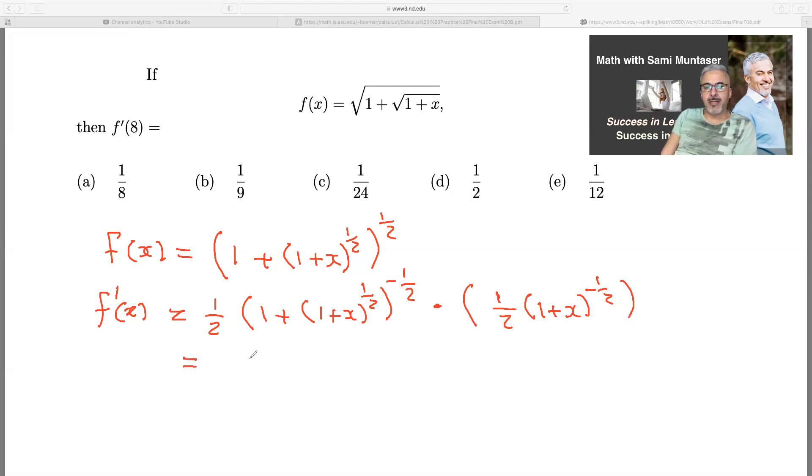Now here, I think I'm just gonna write it as one over two. I'm gonna bring all of this down to make the exponent positive. So one plus one plus x to the power of half. It's that negative half that I want to make positive.